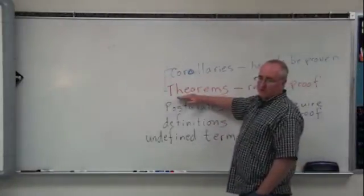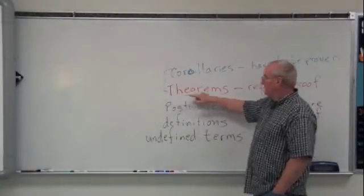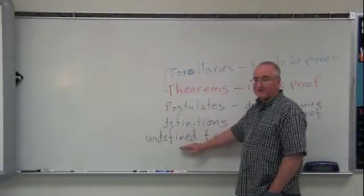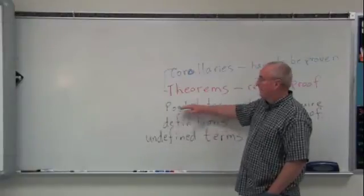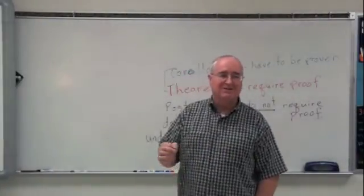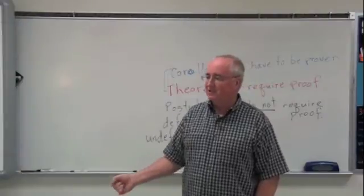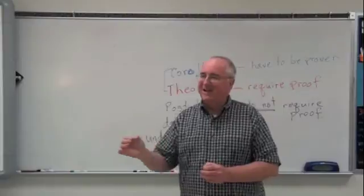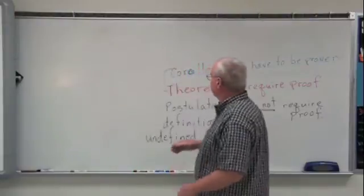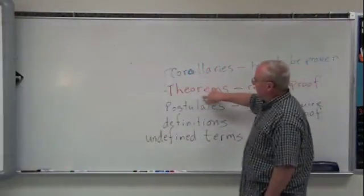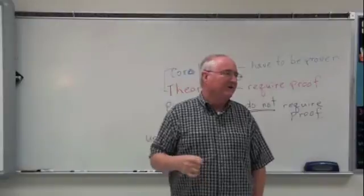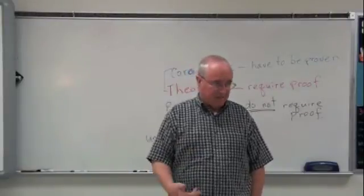Then we can begin to build theorems. Theorems are statements that require proof. To prove them, you have to say where they came from — they came from undefined terms, definitions, and postulates, or other theorems that have already been proven. There are also corollaries. Corollaries are simple additions to theorems — reasonable extensions of a theorem along the same lines, just an add-on. Corollaries also have to be proven using all these building blocks.